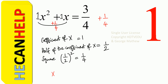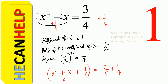So what do we get? x squared plus x plus 1 over 4 is equal to 3 over 4 plus 1 over 4. What is on the left side? This is nothing but x plus 1 over 2, the whole squared.